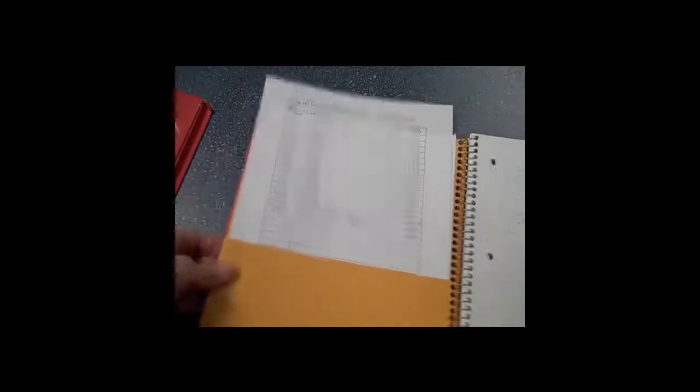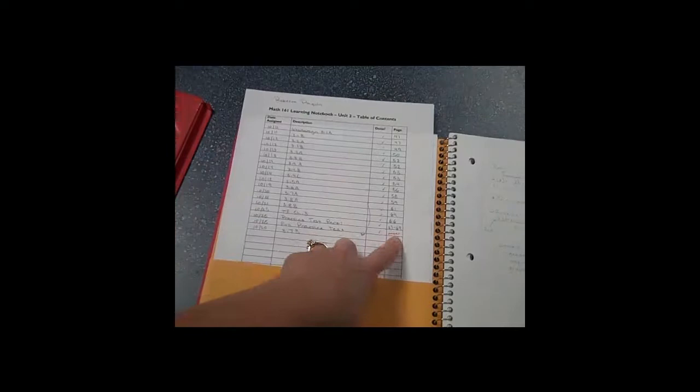Some students choose to use a spiral bind for their notebooks. And when they do that, then they often have their table of contents in a pocket, and any handouts or practice tests in the pocket. And they'll just say that. They'll say it's on paper inside of their notebook.